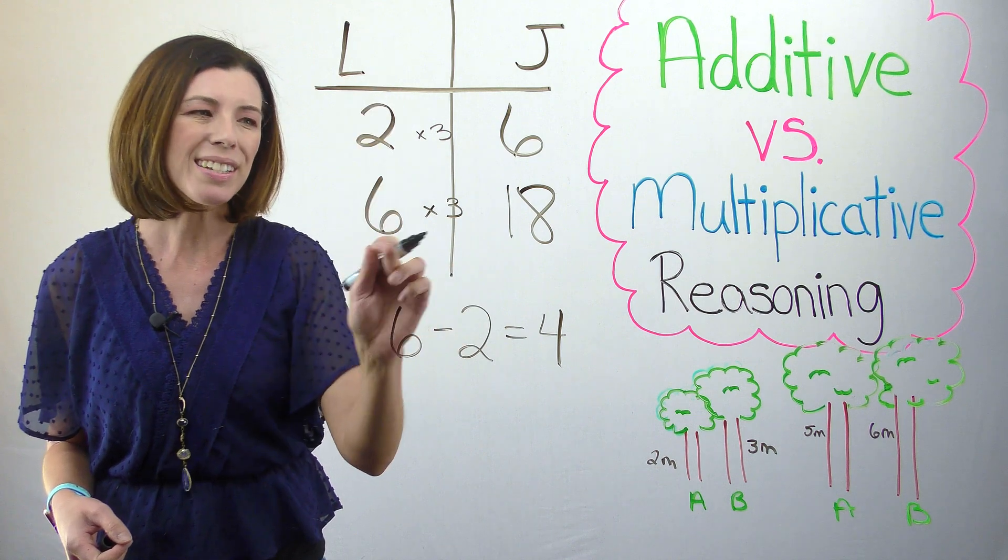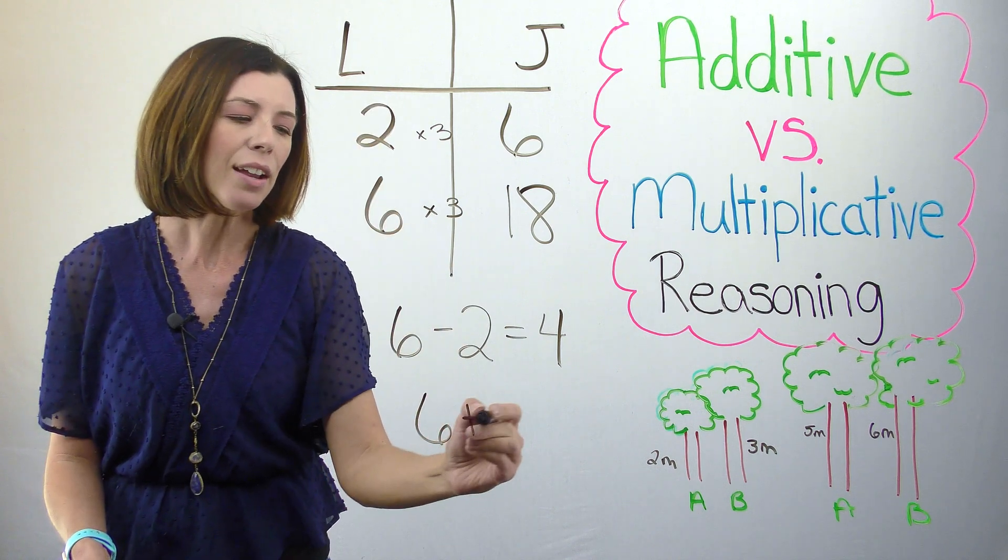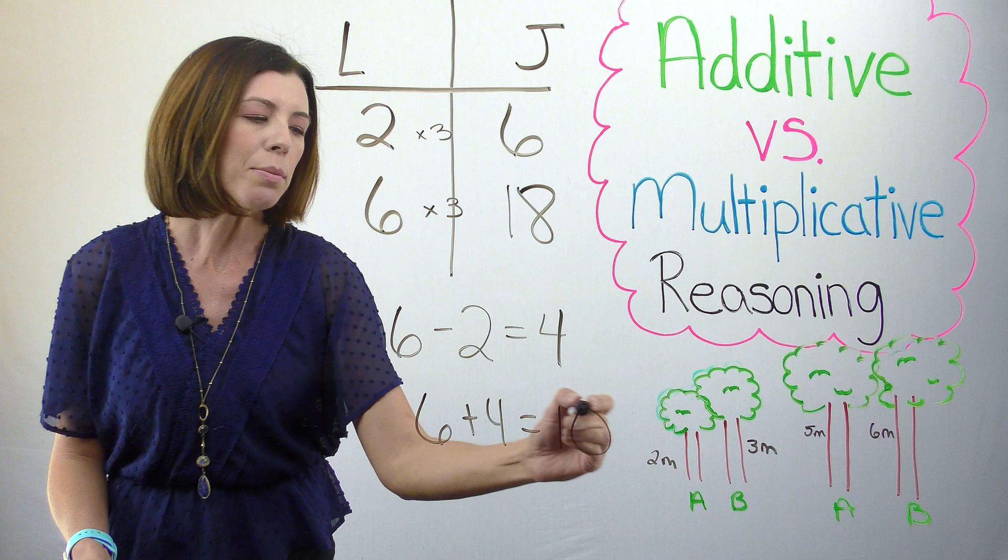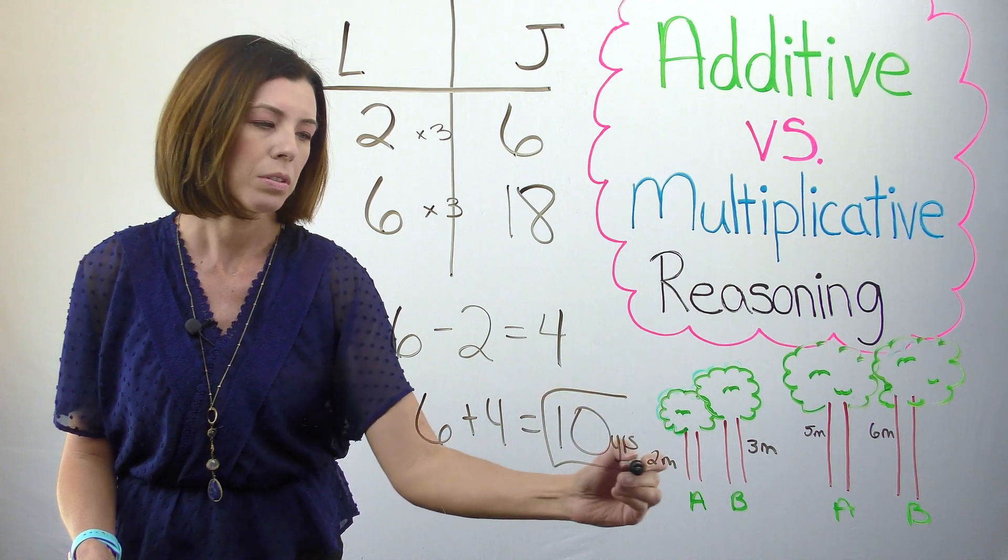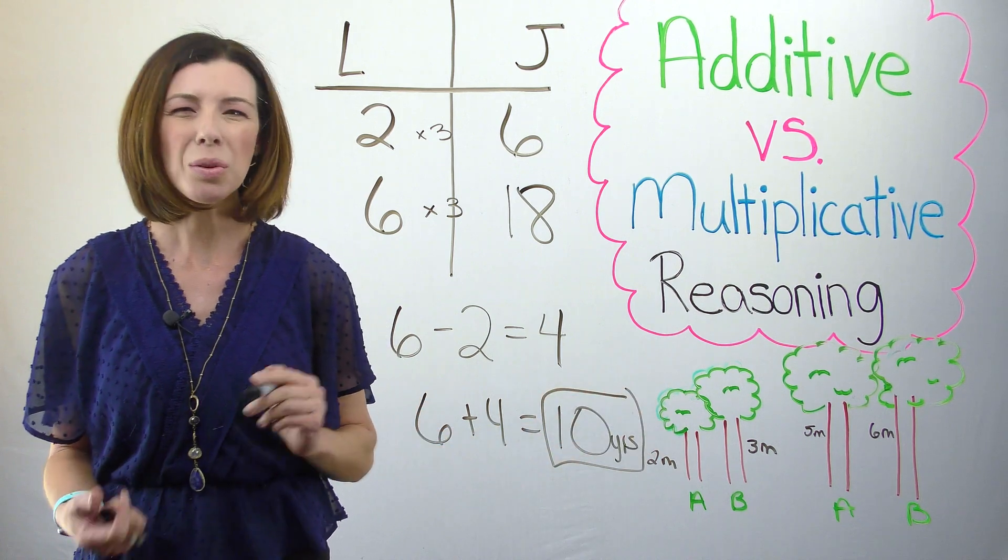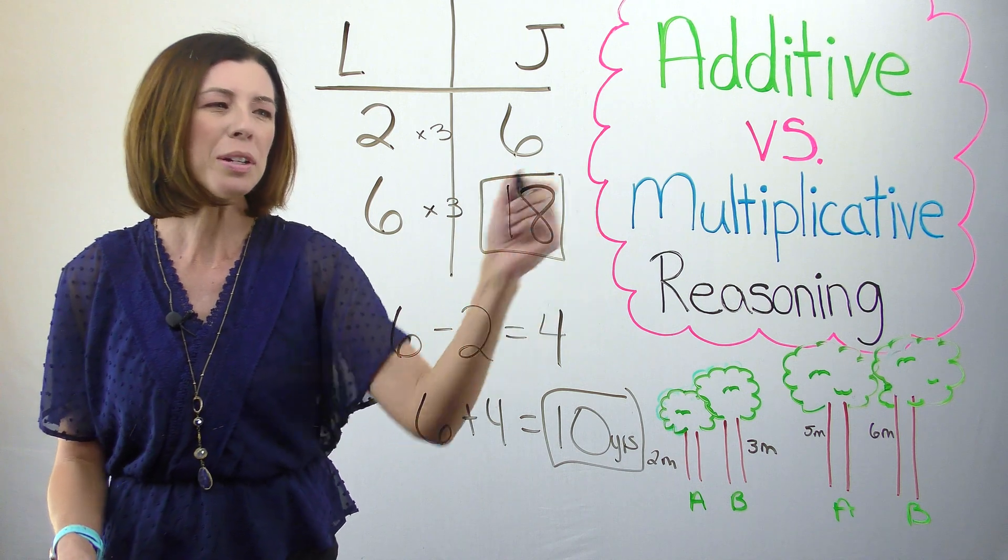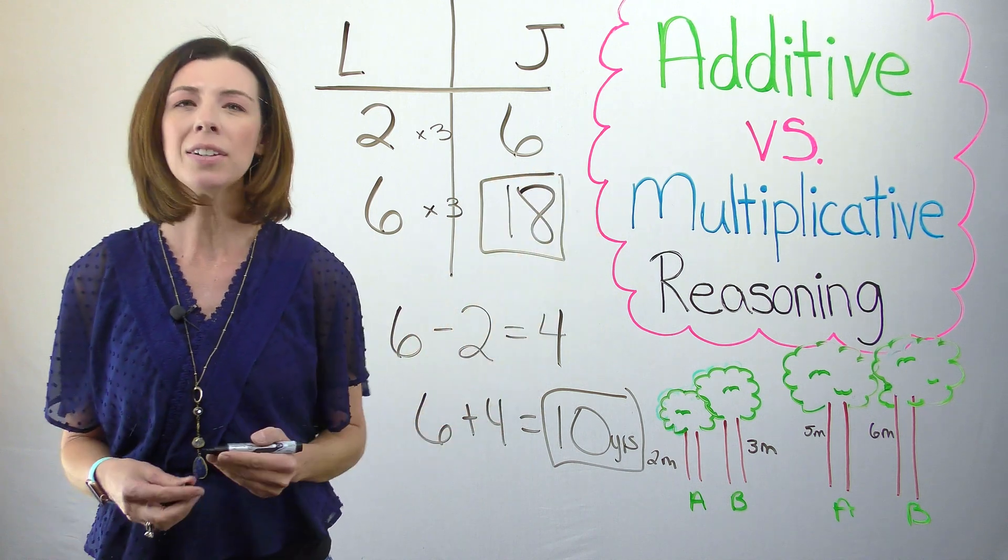So if Lisa is 6, then I add 4 more years to that. James should be 10 years old when Lisa is 6. So which is it? Is James going to be 18 years old or 10 years old?